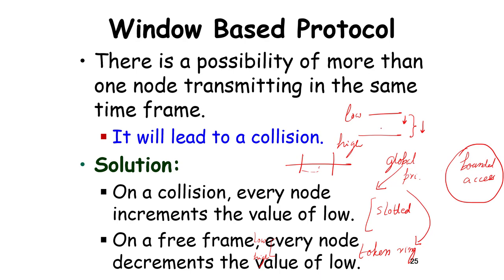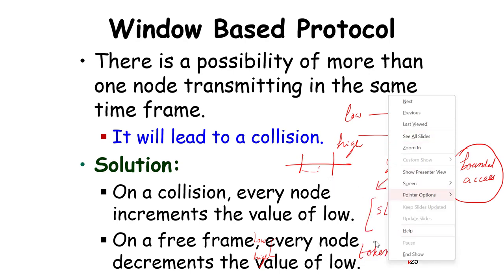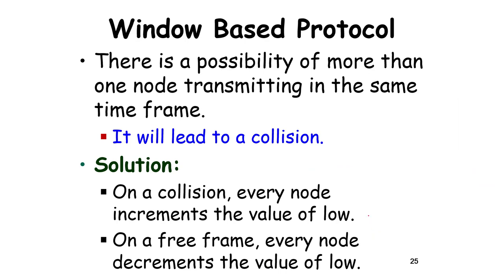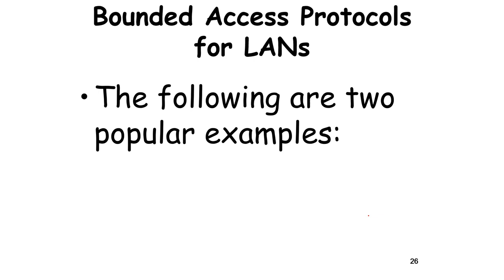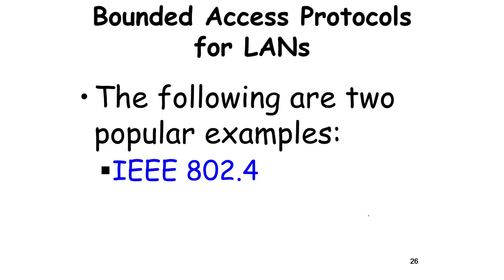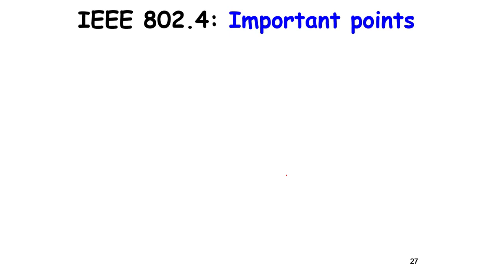Comparing 802.4 and 802.5: 802.4 is like a token ring with bounded access, where the time given to each node is proportional to its bandwidth requirement — similarly to how RMS assigns more time to messages with lower periods. 802.5 is a pure global priority protocol that arbitrates for the highest priority message each time and transmits it. Now let's look at R-Ether, which is real-time Ethernet.